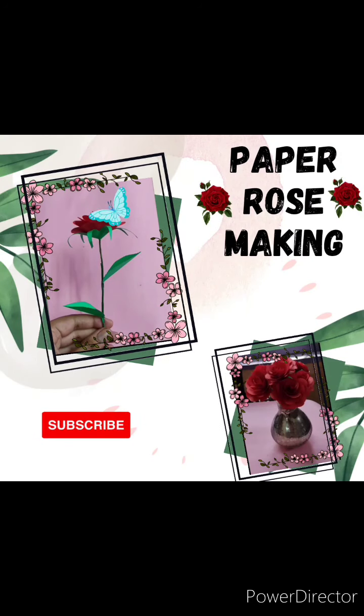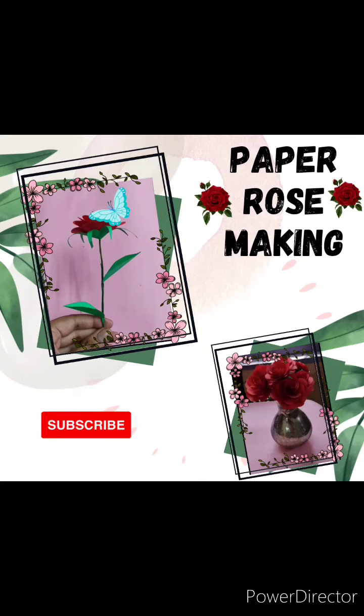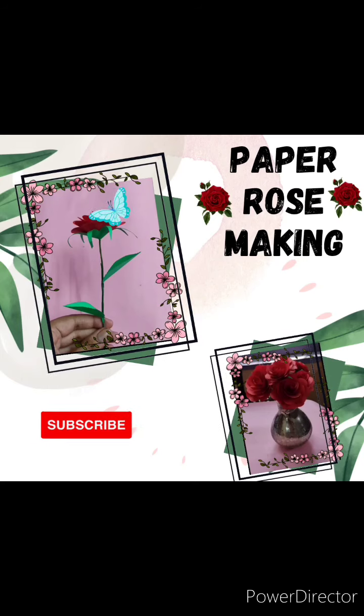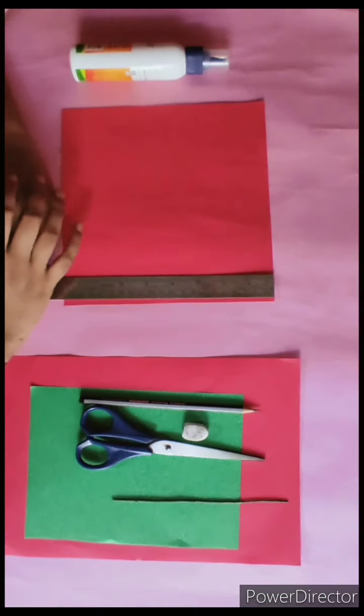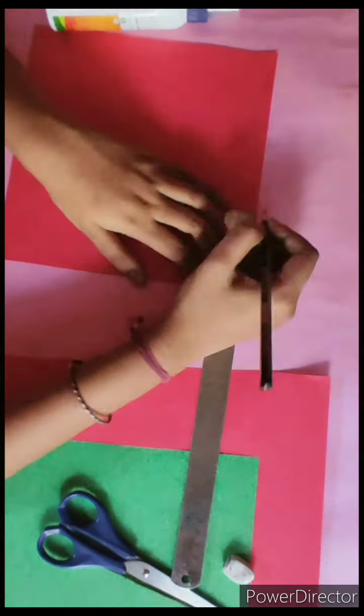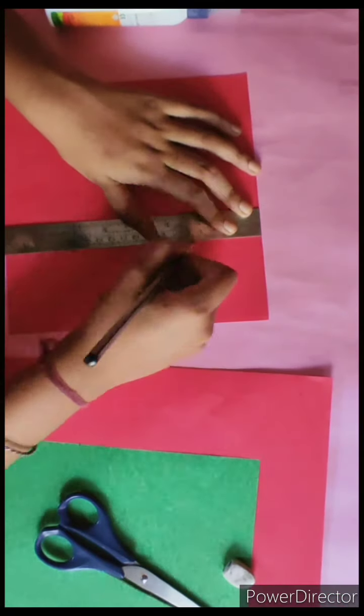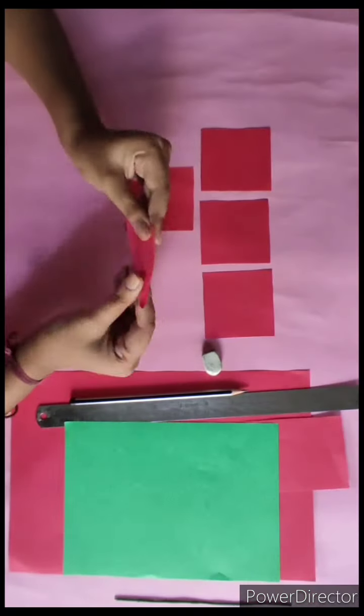Hi guys, welcome back to my channel. Today we will learn how to make paper roses, so let's get started. Here we have to cut five pieces of red sheet, dimension 7 centimeter by 7 centimeter.